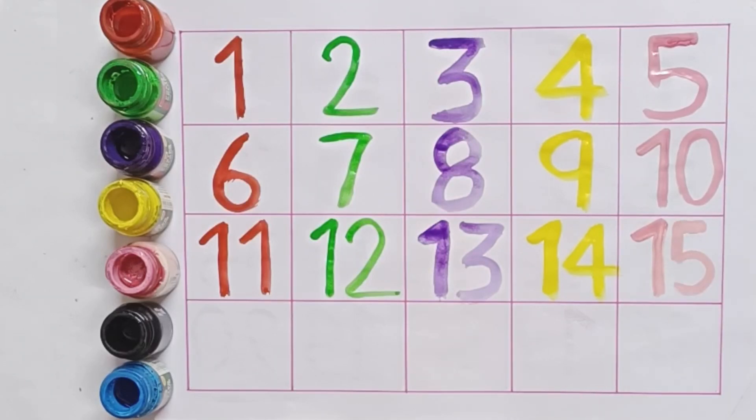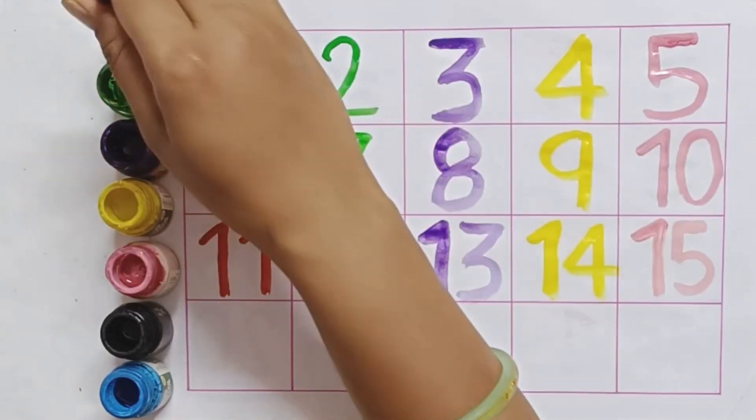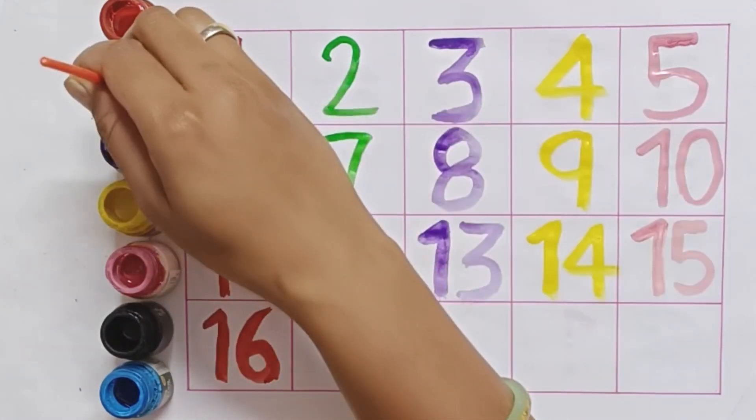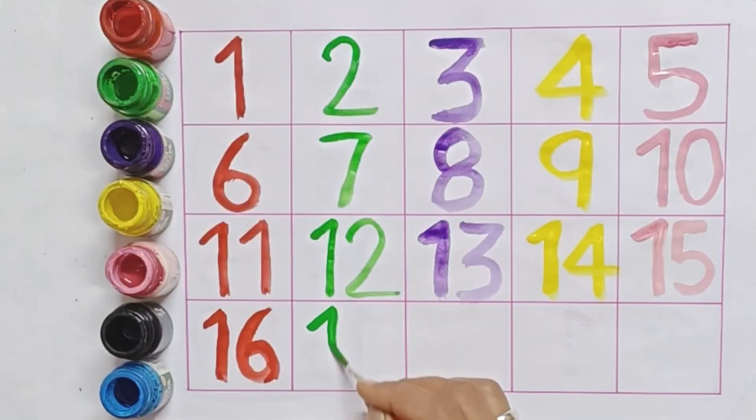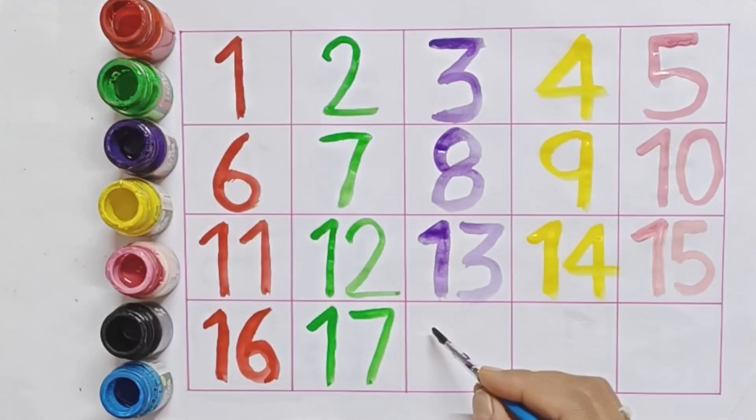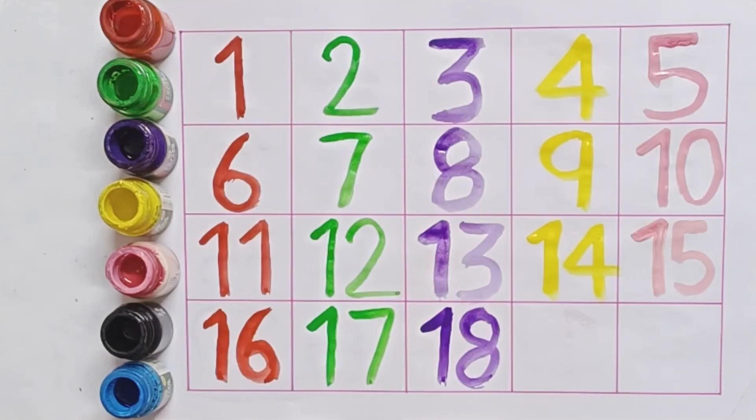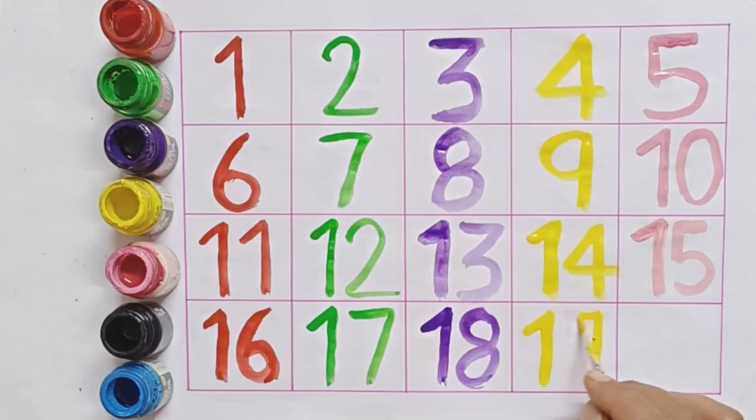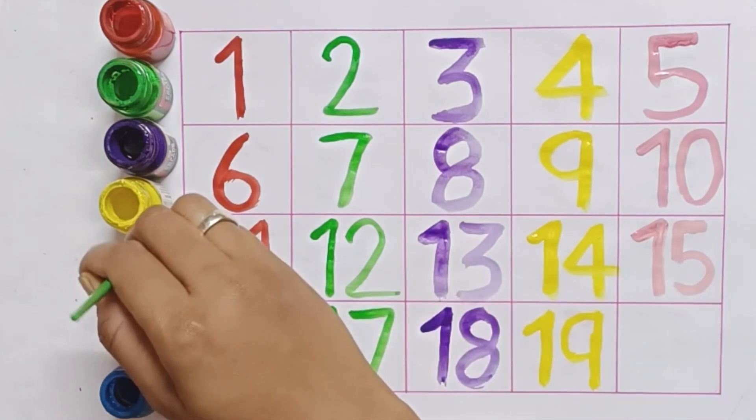16. S-I-X-T-E-E-N-16. 17. S-E-V-E-N-T-E-E-N-17. 18. E-I-G-H-T-E-E-N-18. 19. N-I-N-E-T-E-E-N-19. 20. T-W-E-N-T-Y-20.